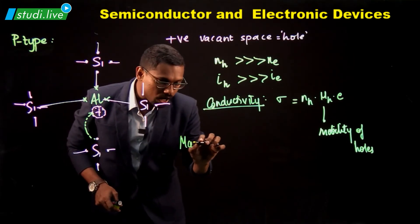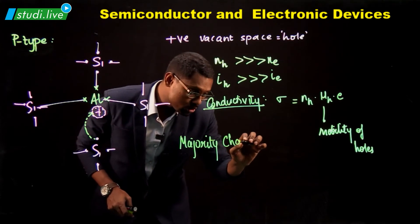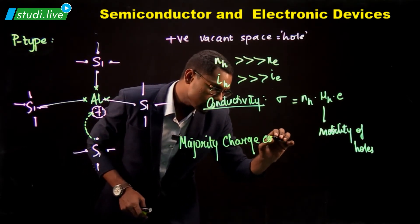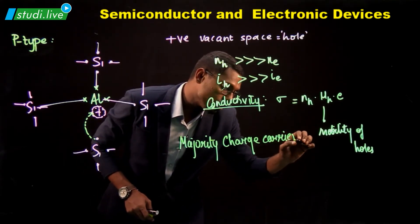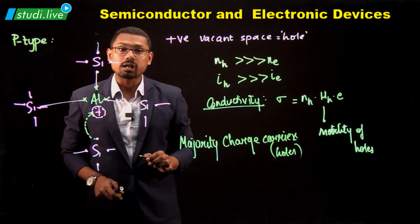Repeat with me: My majority charge carriers are holes. My majority charge carriers are holes. What are my electrons?